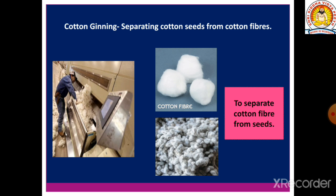The fourth example is cotton ginning, which we already studied in Chapter 3: Fiber to Fabric. In the process of cotton ginning, the cotton seeds are separated from cotton fibers. So this is also a separation method — cotton fiber is separated from cotton seeds.